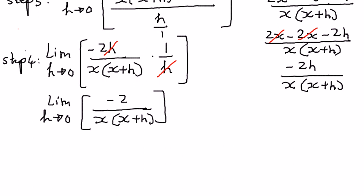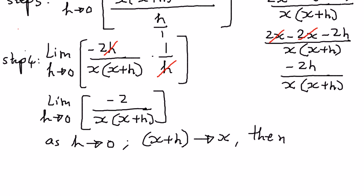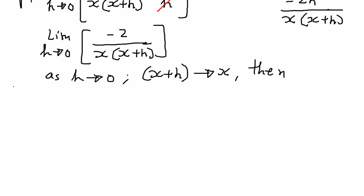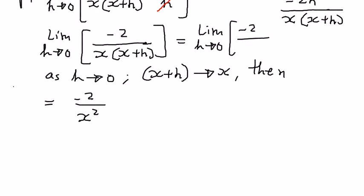Now, as we can see, as h approaches 0, the value of the expression x plus h approaches x. Therefore, we can write this as follows. This simplifies to negative 2 over x to the power of 2. As h approaches 0, x plus h approaches x, so we can write this as negative 2 divided by x squared.